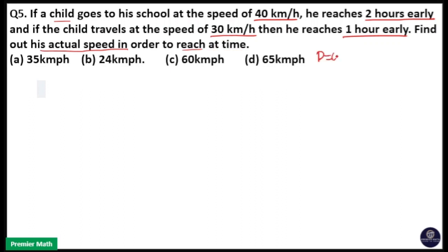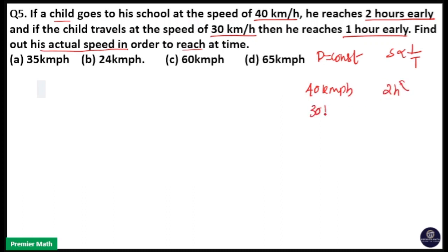Here distance is constant. That means speed is inversely proportional to time. So we need to take speed ratio and time ratio here. At 40 km per hour, the child reaches the school 2 hours earlier, and at 30 km per hour, the child reaches the school 1 hour earlier.